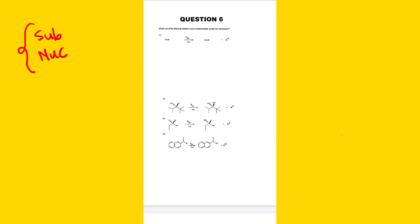Looking at the nucleophile across all the options, we can see that it is a strong nucleophile, which is suitable for SN2. Since all options share the same strong nucleophile, we can confirm SN2 and move on to check the substrate. We are now 100% sure the nucleophile favors SN2, so let us examine the substrate for each option.